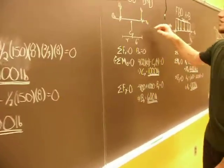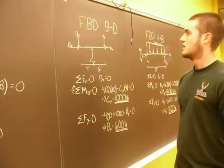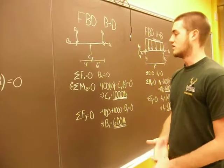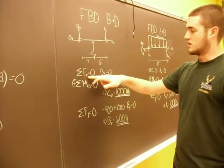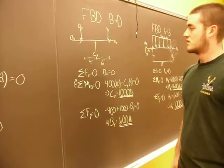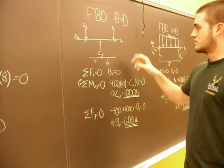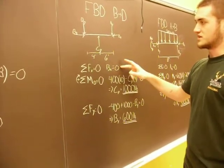Next we'll go to the middle section. So that's from span B to D. Again, sum of the forces in the X equals zero. Your DX was zero. So your BX has to be zero.